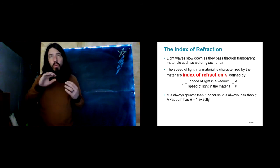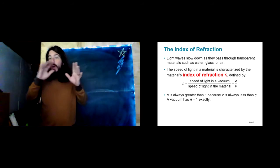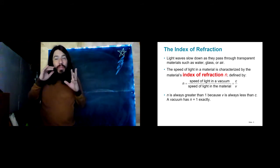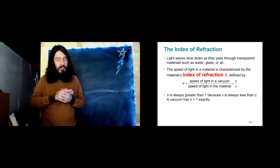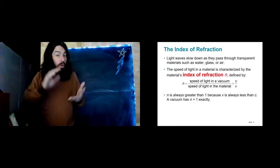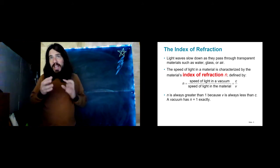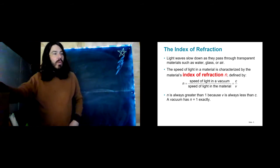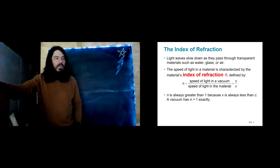That's true. But maybe what you haven't learned is that the speed of light actually varies depending on what substance the light is moving through. Through empty space or through air, it's basically moving at three times ten to the eighth meters per second. It actually slows down a tiny bit in air, but not enough to worry about. In empty space, light moves three times ten to the eighth meters per second. When it enters some other medium like water or glass, it slows down. We characterize how much it slows down by a quantity called the index of refraction, and we use the letter N to represent that.